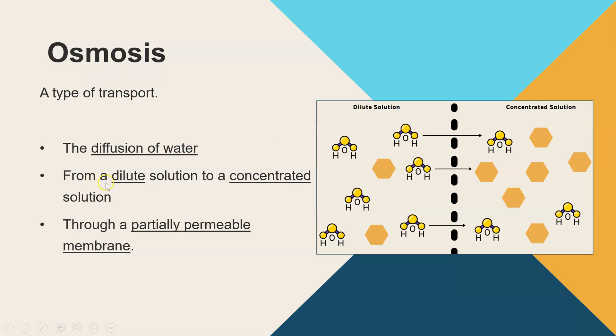The direction that the water moves is from a dilute solution to a concentrated solution. And that's what I've demonstrated on this diagram here. The dilute solution has lots of water molecules compared to only two solute molecules. In a concentrated solution you have much fewer water molecules compared to your solute. And that could be dissolved sugar or dissolved salt for example.